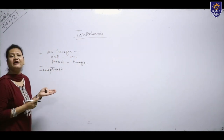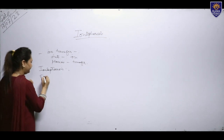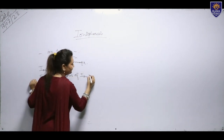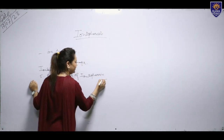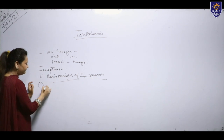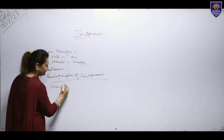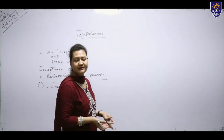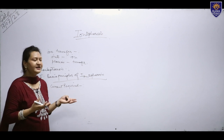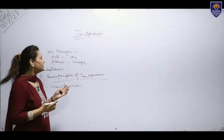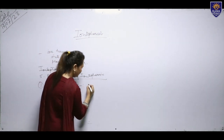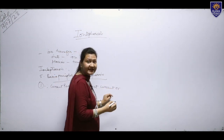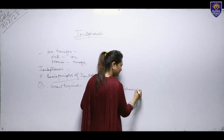Now we have five basic principles of iontophoresis. The first basic principle is current required. For the treatment to be done, or for the ions which are needed to be transferred into the tissues, we need a certain sort of current. That current is known as direct current, also called galvanic current.